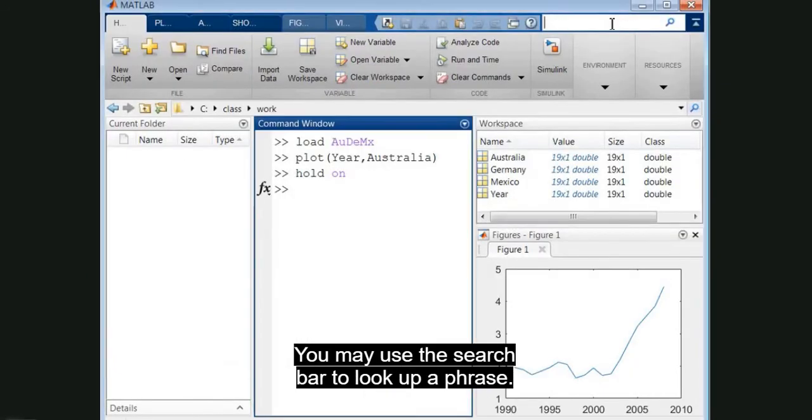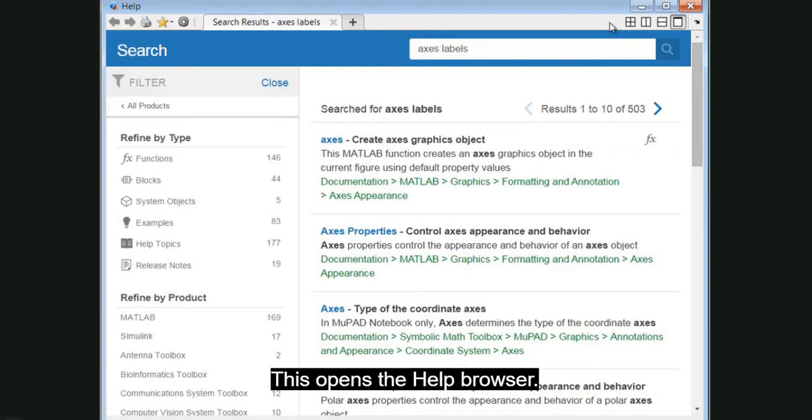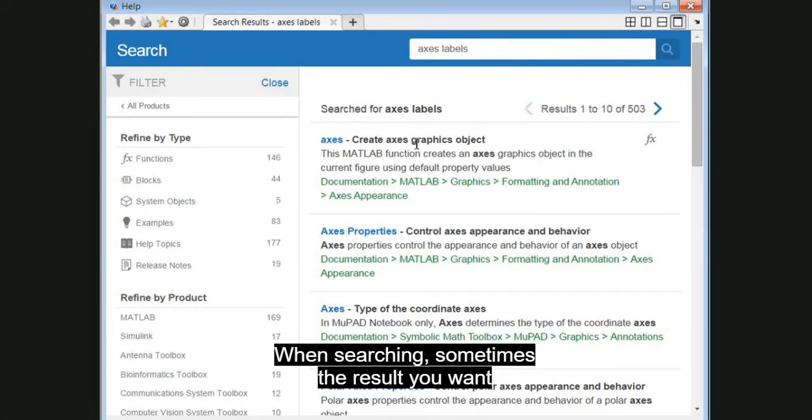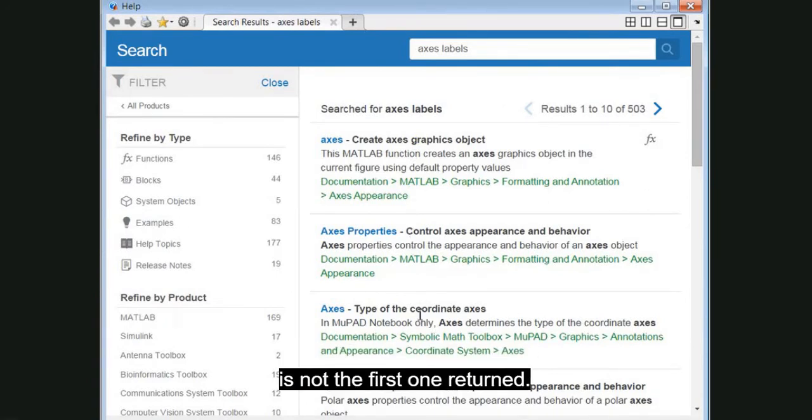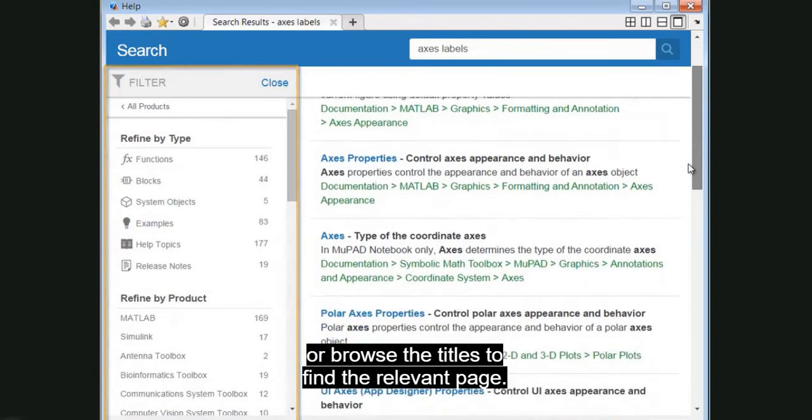You may use the search bar to look up a phrase. This opens the help browser. When searching, sometimes the result you want is not the first one returned, so you may need to filter your search or browse the titles to find the relevant page.